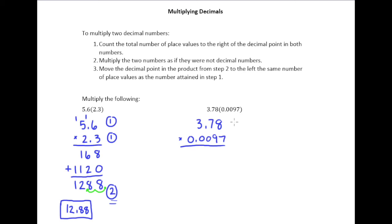So step one says count up the number of places to the right of the decimal point. I have 2 here, and I have 4 here. Totaling those up, that's going to mean I'm going to need to move my decimal point back six places of wherever it ends up.